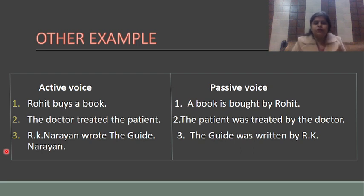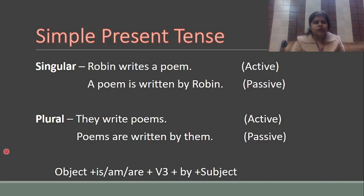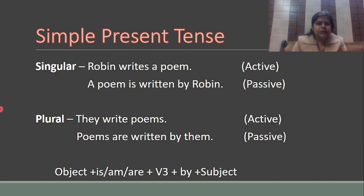Now we'll learn how to change active voice into passive voice. The key point is that we change active form into passive form according to tenses. Until we know the tense used in a sentence, we won't be able to convert it into passive voice. The first tense I've taken is simple present tense.